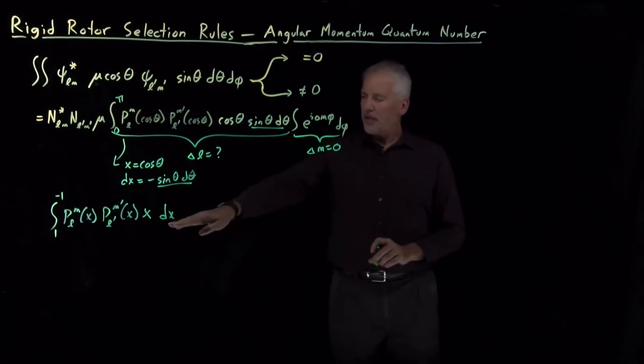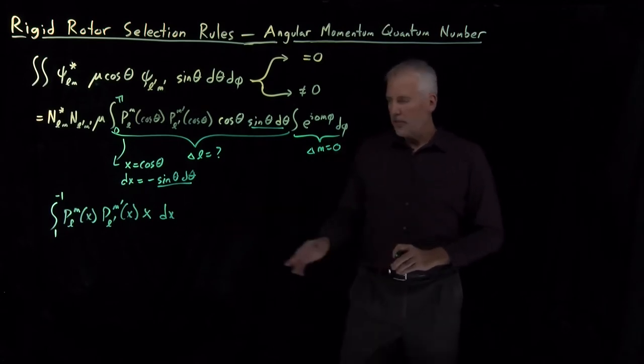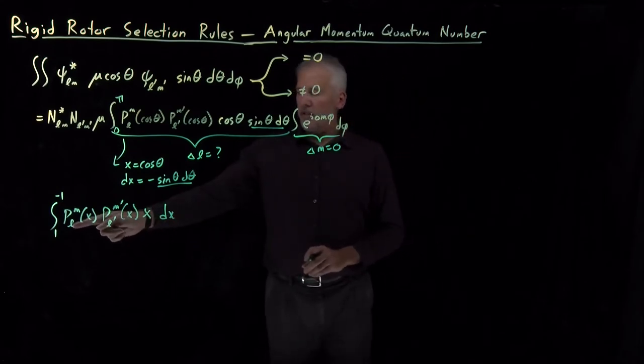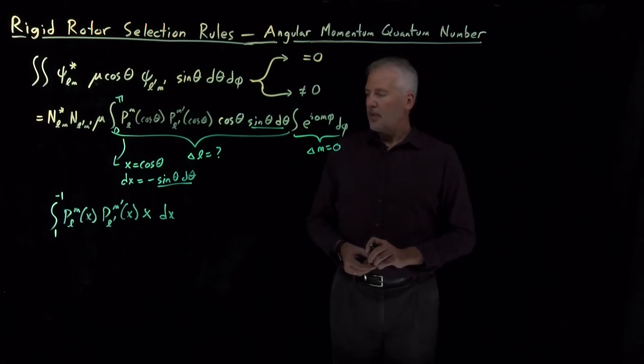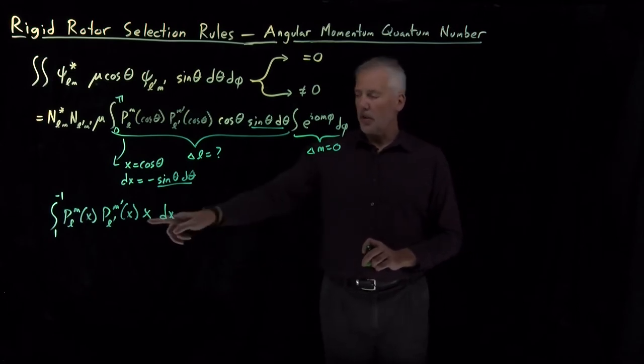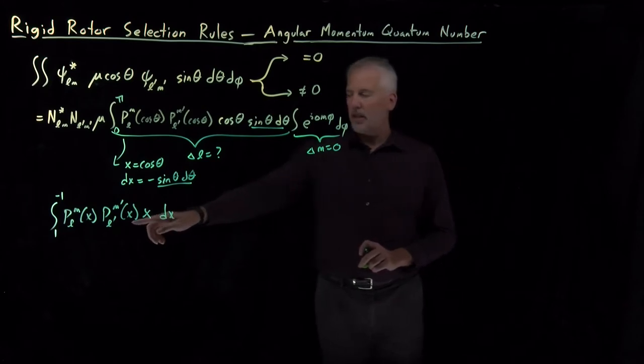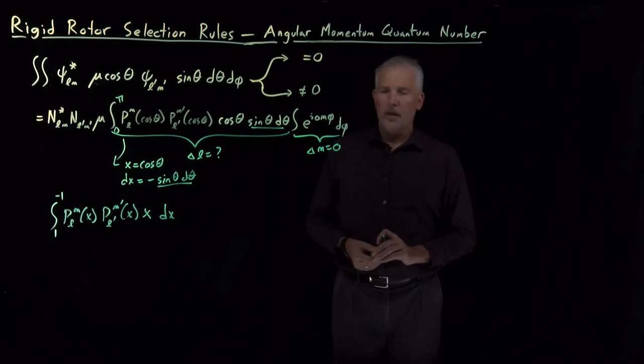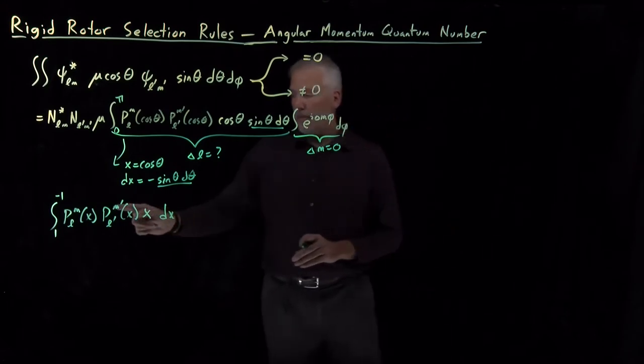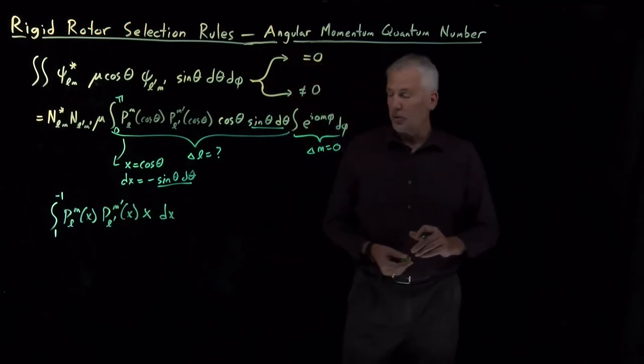In order to make progress doing anything with that integral, we could certainly plug in specific values like the 0,0,1,0 example we've considered previously. But to do anything with that in the general case, what we need to remember is that there's a recurrence relation between these Legendre polynomials. I've talked previously about a recursion relation for the plane Legendre polynomials, the ones with M equals 0 as a superscript.